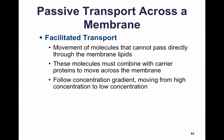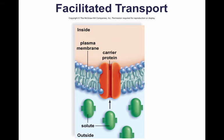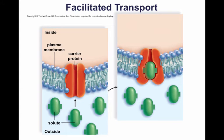Passive transport is also called facilitated diffusion. The solute simply binds to the passive transport protein, and the protein releases it to the other side of the membrane. A glucose transporter is an example of a passive transport protein. This protein changes shape when it binds to a molecule of glucose, and that shape change moves the solute to the opposite side of the membrane, where it detaches from the transport protein.